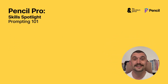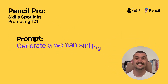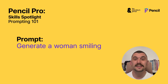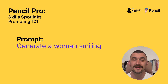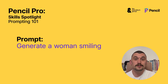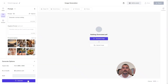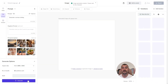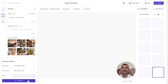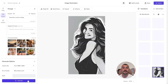We're going to launch straight in with a prompt. So keeping it really basic: generate a woman smiling. And we're going to put this into Pencil using the Stable Diffusion model and just see what kind of results we get. We'll hit generate. For full disclosure, I have sped up some of these generation times just so we don't have to wait around.